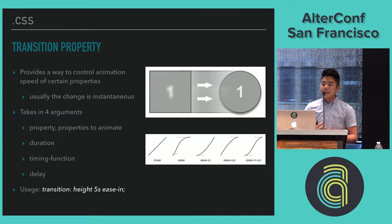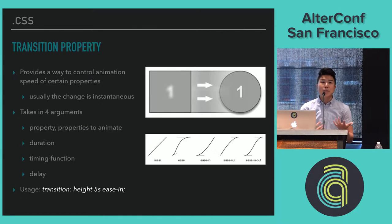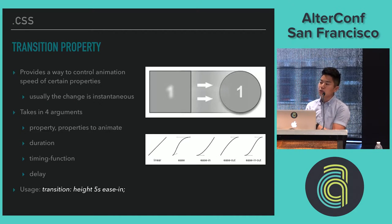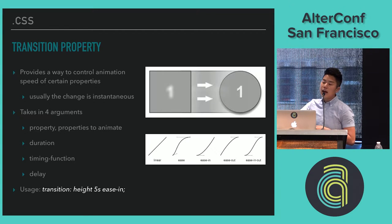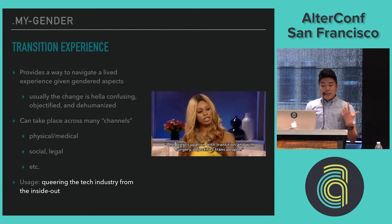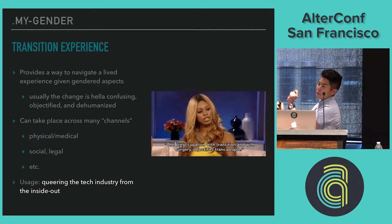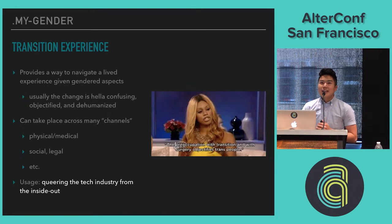The CSS transition property is pretty straightforward. You give it four arguments, and CSS takes these and animates how one element goes from one state to another — usually an instantaneous transition, but this gives you granular control over how you want that to happen. The example I've given changes the height of an element over five seconds. Gender transitions, on the other hand, are not quite so simple. It's not like you just plug a couple things in and poof — you have a gender transition. They're a little bit more complicated.